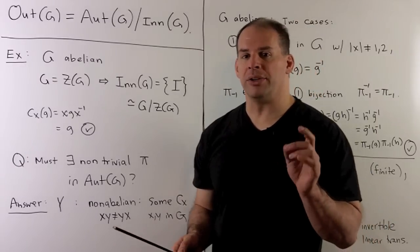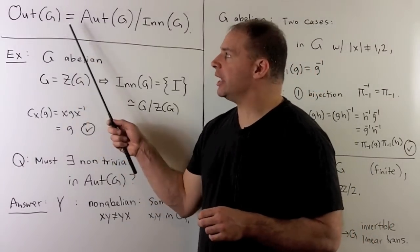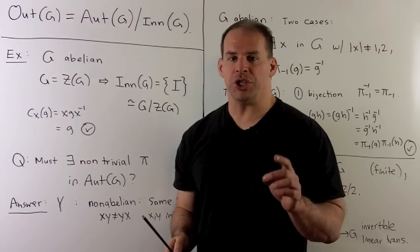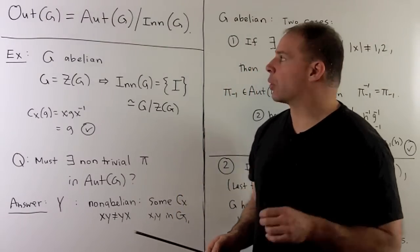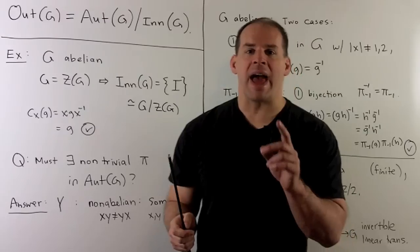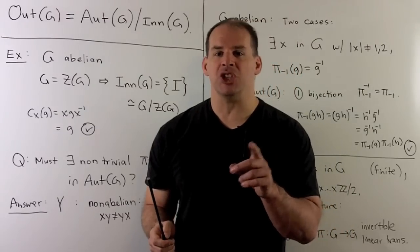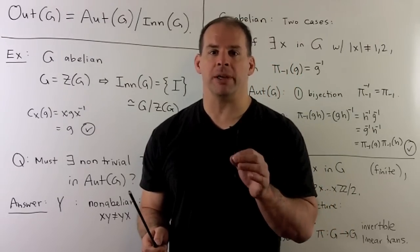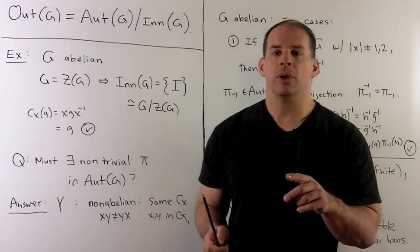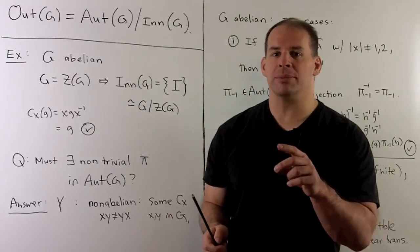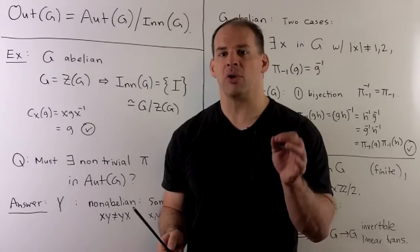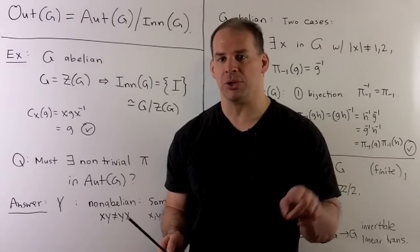For a final definition: Out(G), the group of outer automorphisms of G, is the quotient group Aut(G) by Inn(G). We can think of Out(G) as the genuine automorphisms of G — all automorphisms modded out by those that come from within the group, generated by elements in the group.